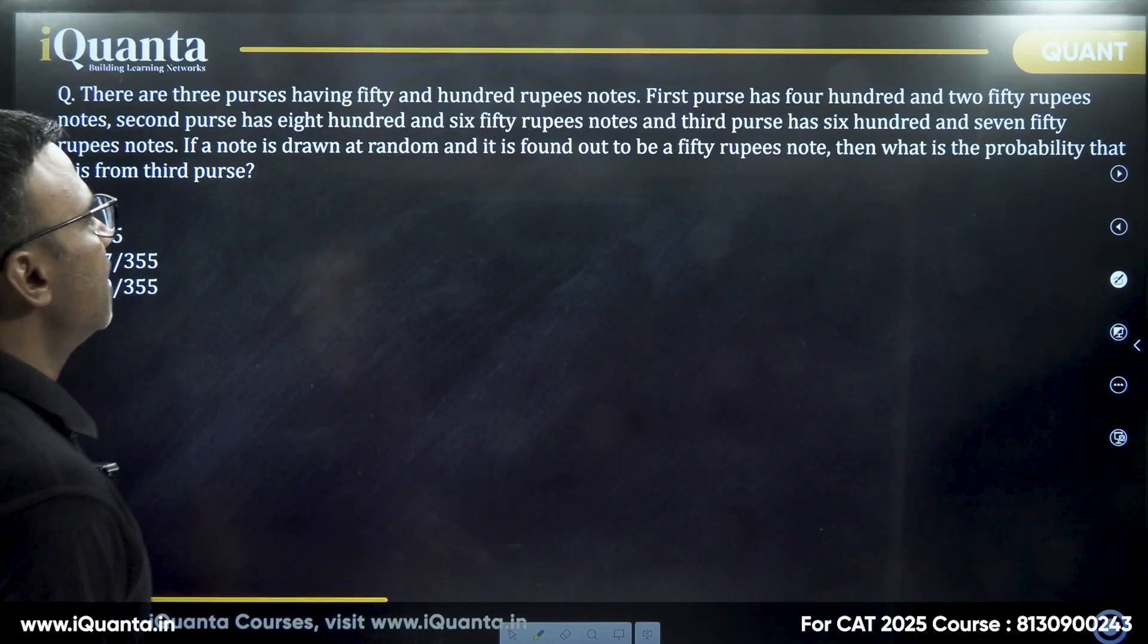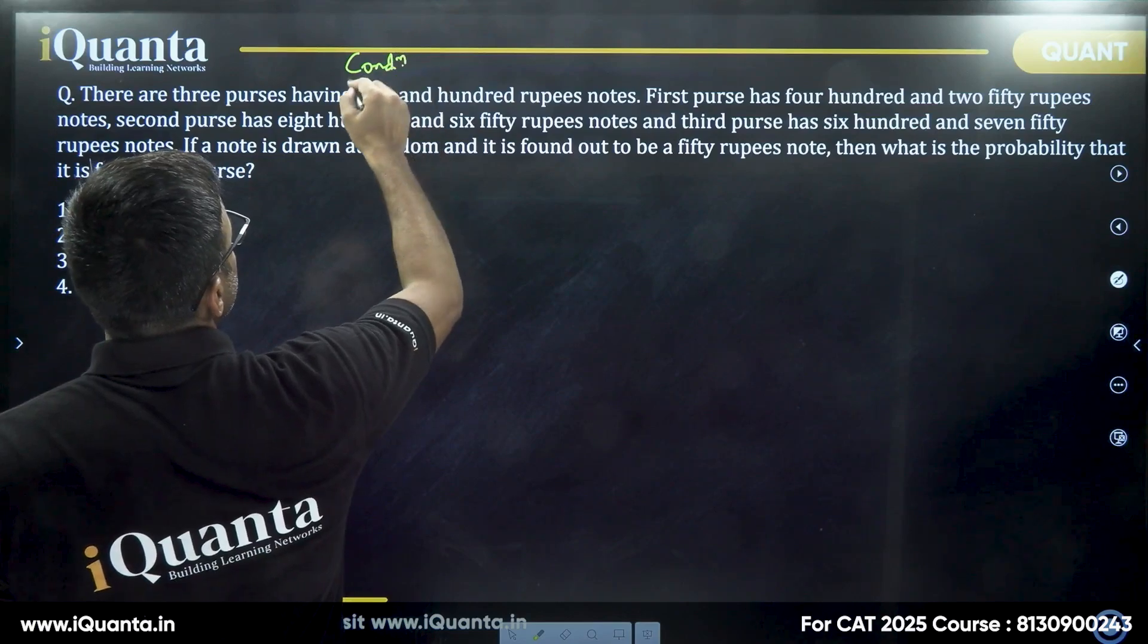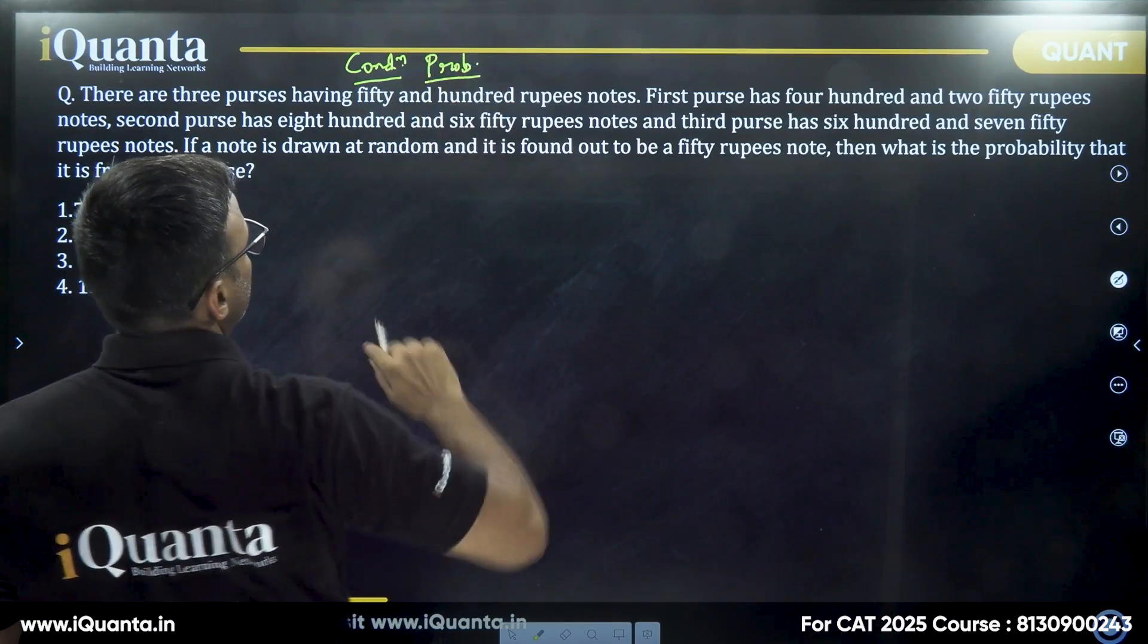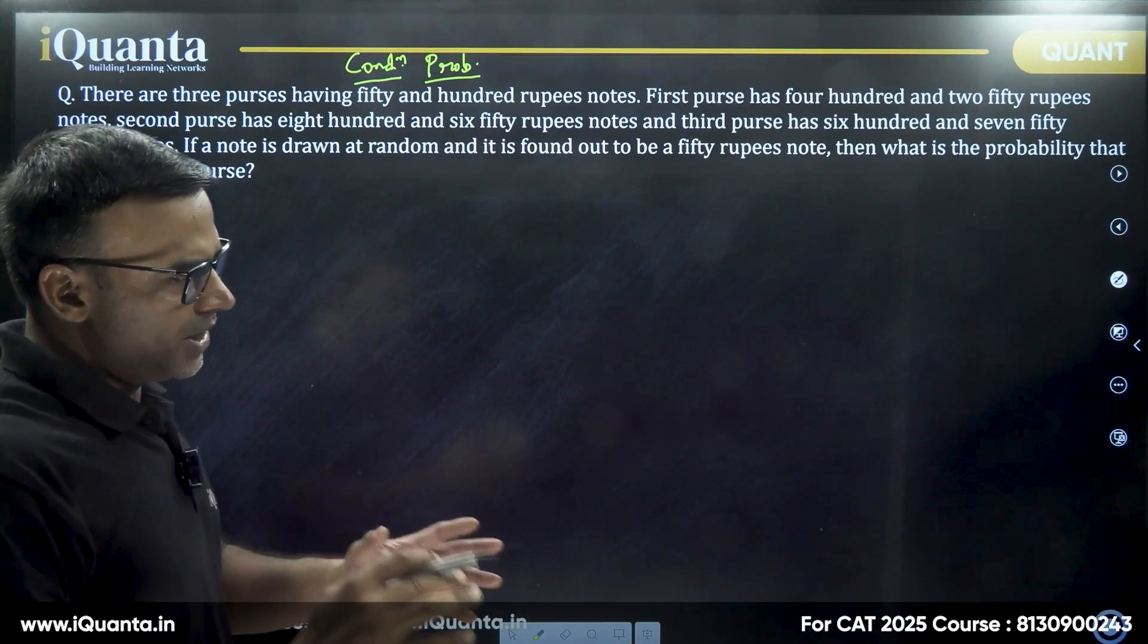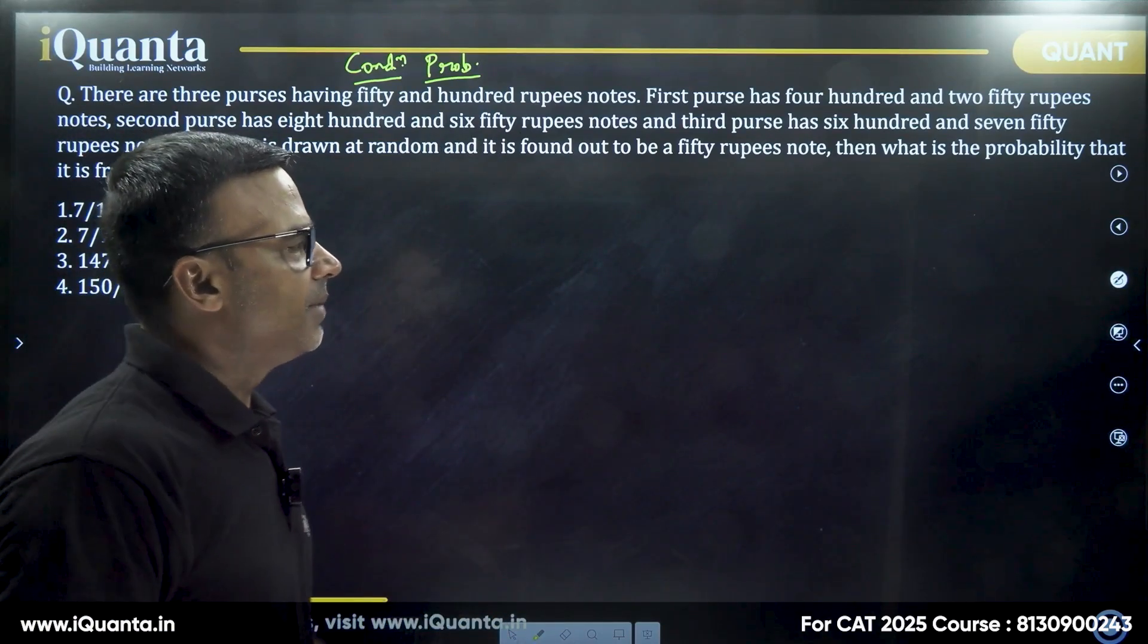Now this is a question from conditional probability. You need to study the chapter and this topic very particularly, then only you'll be able to do it, otherwise simply leave it. If you haven't done the topic of conditional probability in detail, you should not touch this question in the exam, as simple as that.